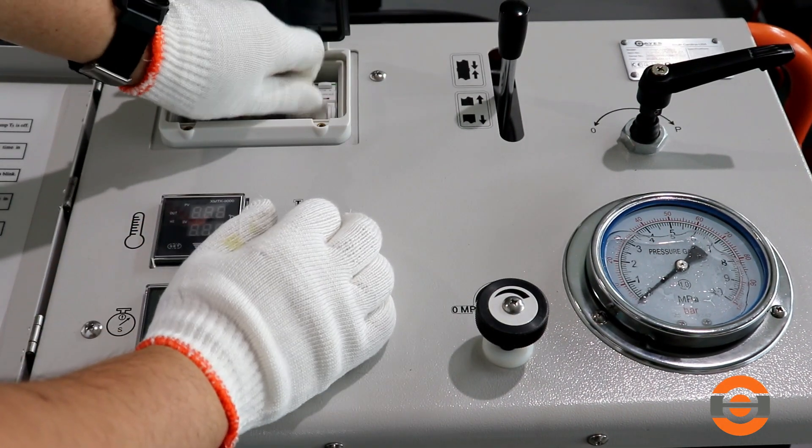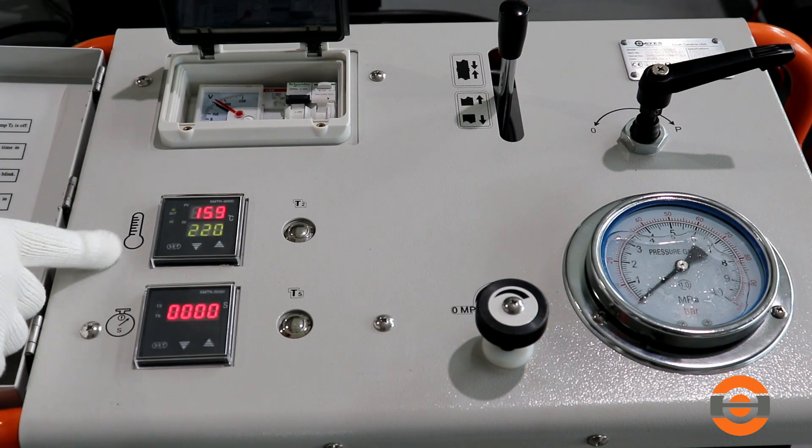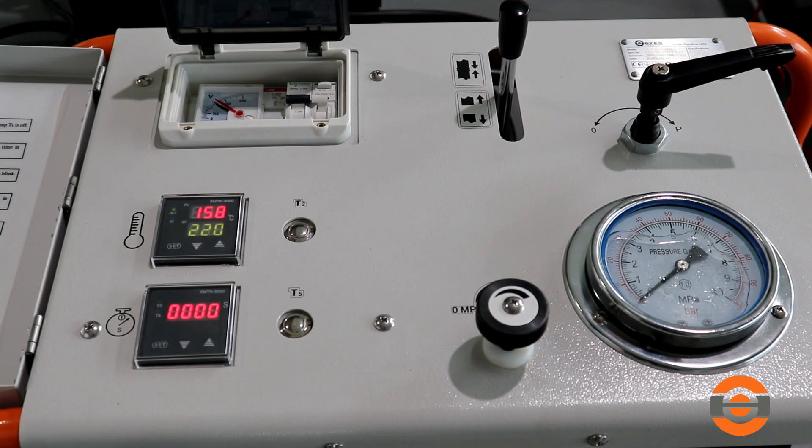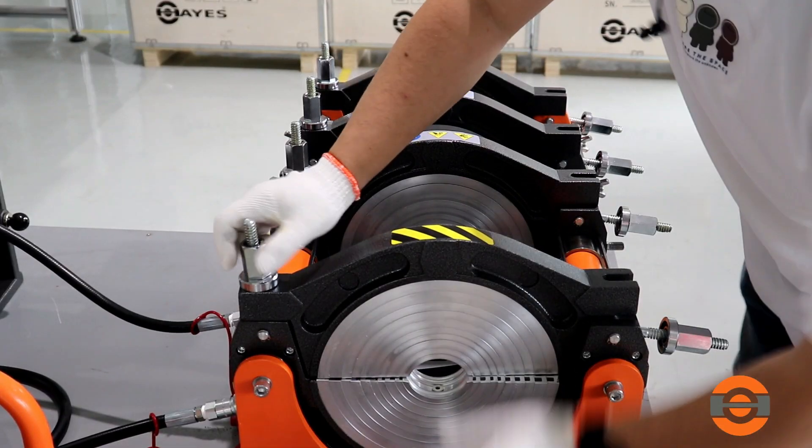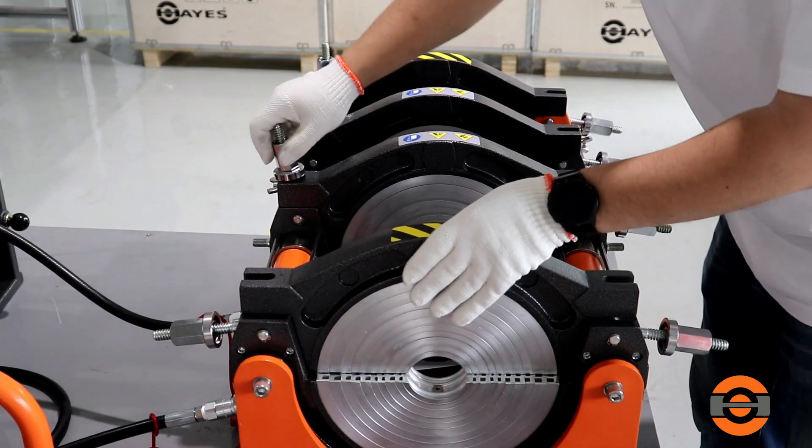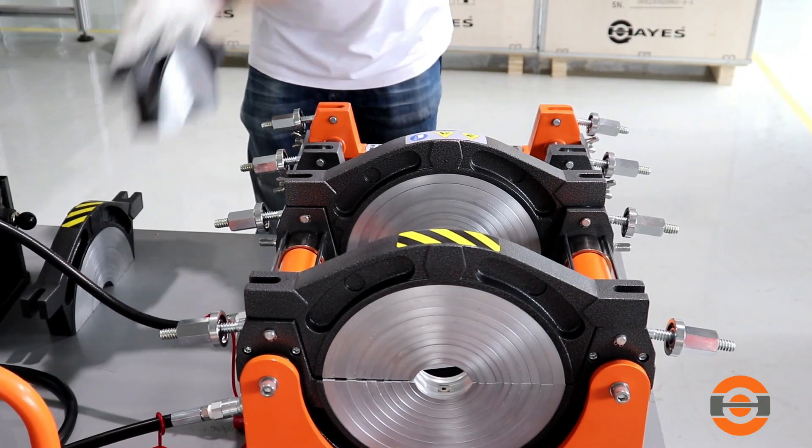Turn on the machine to activate the voltmeter, temperature, and timer. Prepare the pipe. Before starting the welding process, it is very important to select the right inserts for the pipe diameter being fused.